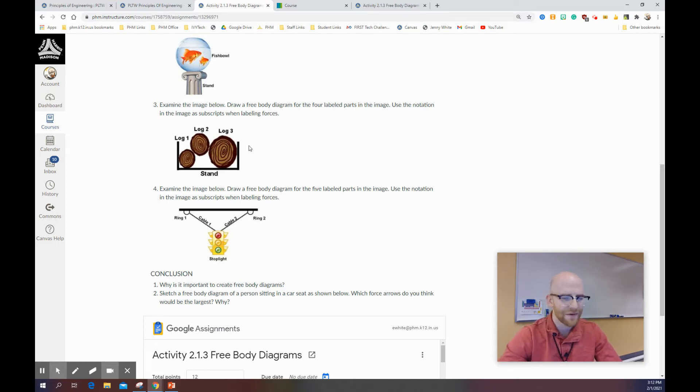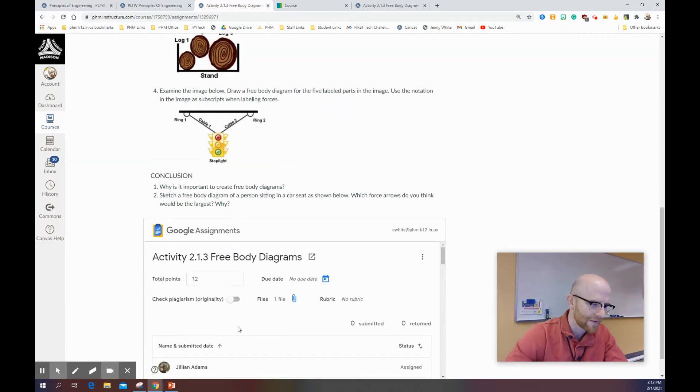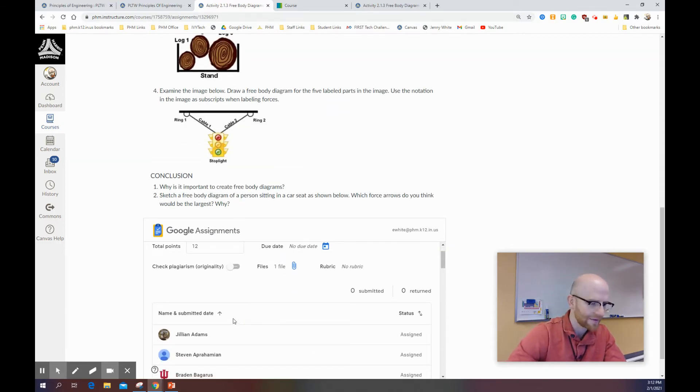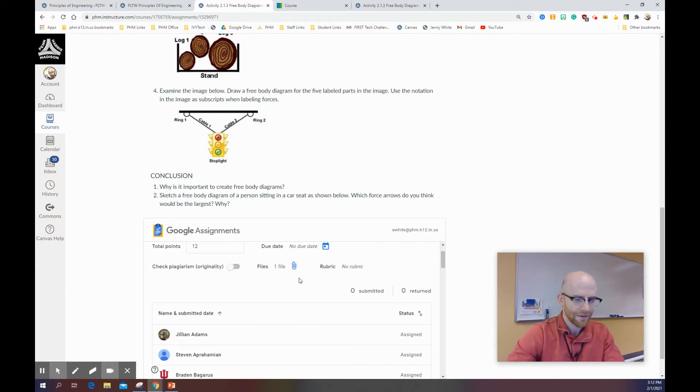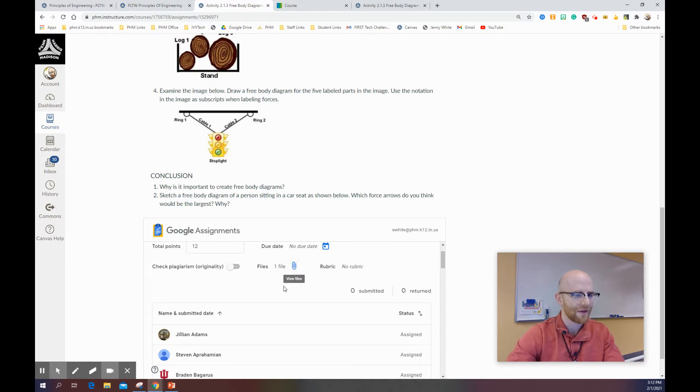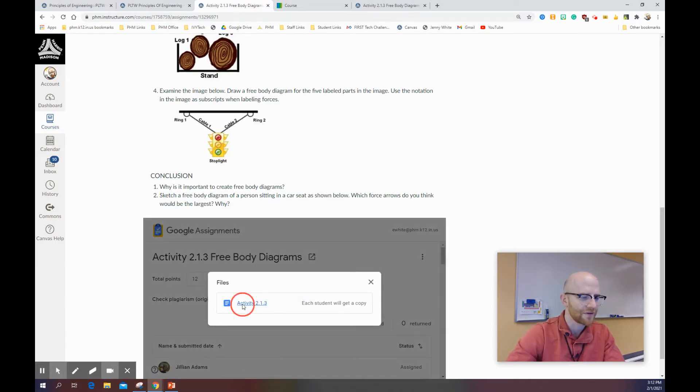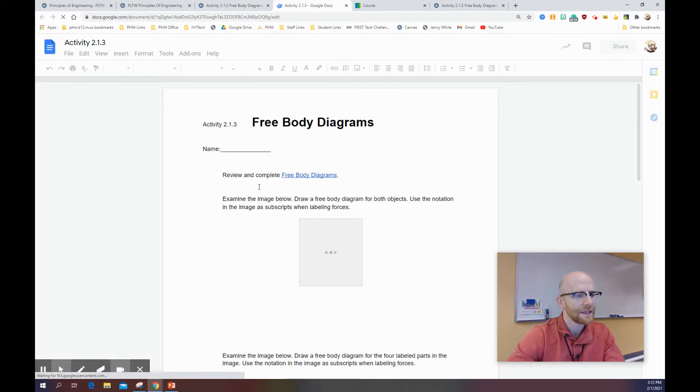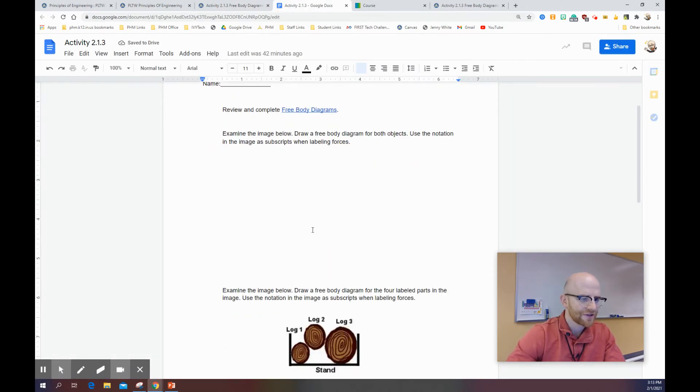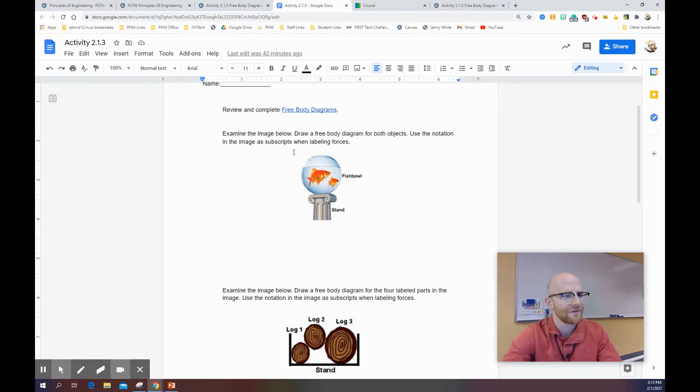The assignment for this one is to do a free body diagram yourself. So here's the assignment. This is the exact same thing that you'll see on the Google document here. So it says in this activity, you will practice creating free body diagrams to evaluate all the forces interacting with those objects. Talking about the fishbowl and the stand here. Examine the image right here. There's also some logs in this log holder here. And then there's a street light with cables and the reactionary force of those.